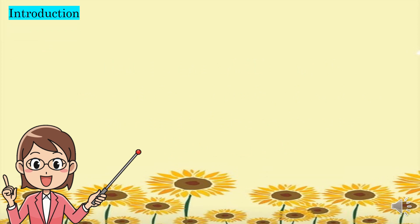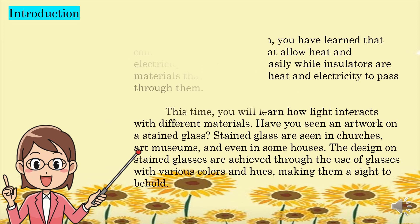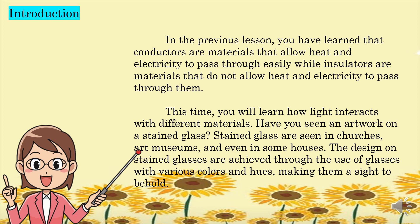For the introduction, in the previous lesson, we have learned that conductors are materials that allow heat and electricity to pass through easily, while insulators are materials that do not allow heat and electricity to pass through them. This time, you will learn how light interacts with different materials.